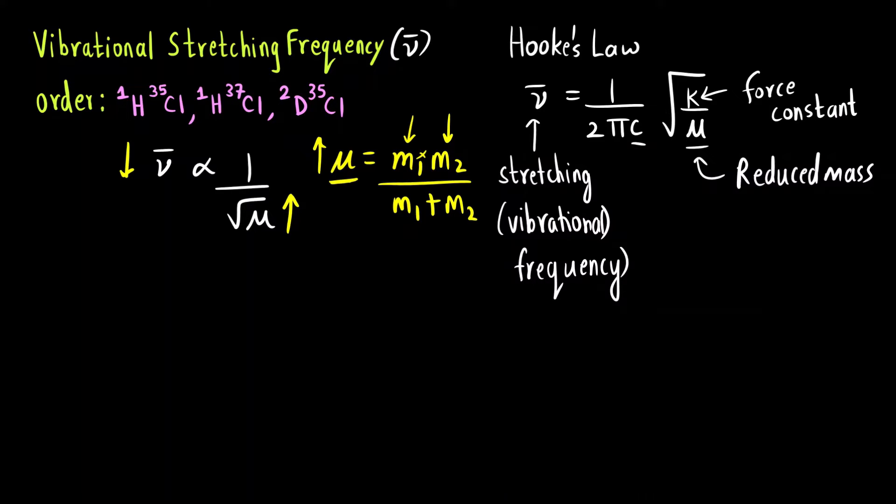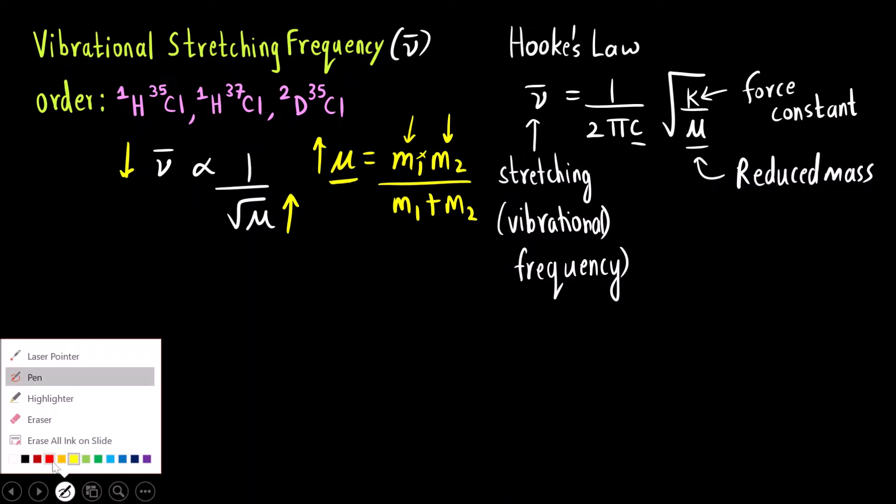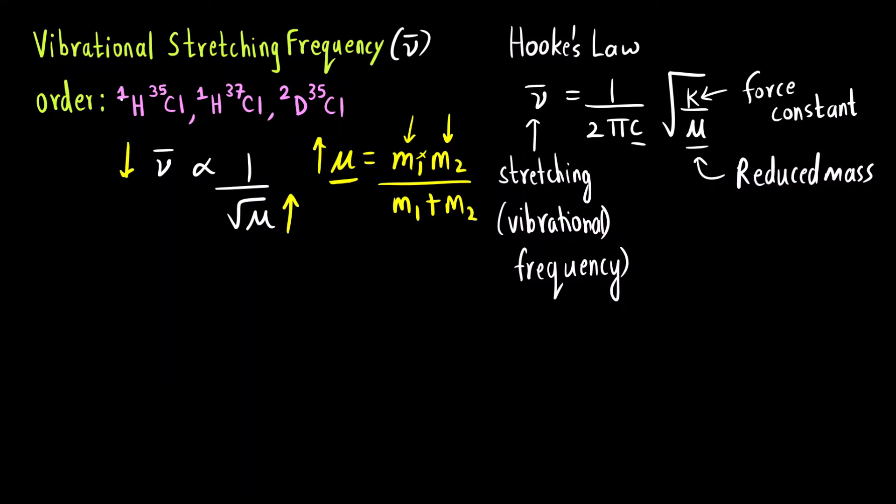What we want is the masses of the atom, the atomic masses should be higher. If they are higher, this will be higher. The reduced mass will be higher. If the reduced mass is higher, then the stretching frequency will be lower. These are the options you can see we have to arrange in the decreasing order.